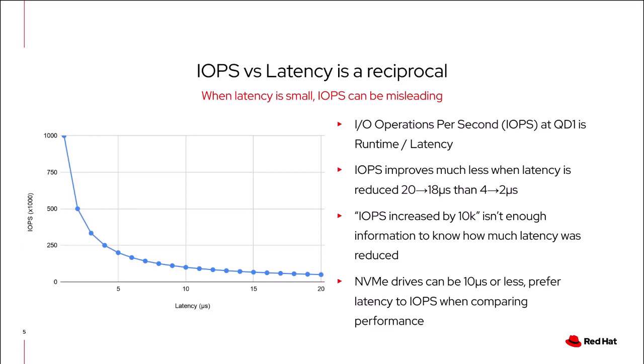If instead we were at 4 microseconds of latency and shaved off 2 microseconds — the same absolute adjustment — we go down to 2 microseconds and jump from 250k IOPS to 500k IOPS. When we were at 20 and removed 2, we only optimized away 10% of the total latency. But when we went from 4 to 2, we optimized away 50%. So the proportional improvement is bigger, which explains the larger jump.